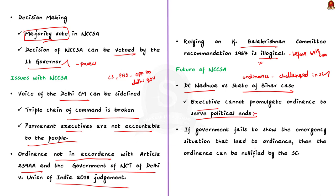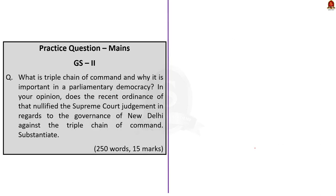In our discussion, we saw about the recent Supreme Court judgment regarding the accountability of officers of civil service in Delhi, the rationale behind the Supreme Court judgment, the ordinance passed by the President, the NCCSA, the criticism against the ordinance, and finally the future of the ordinance. Now let us take up the next article for our discussion.